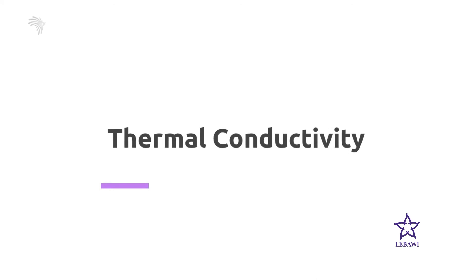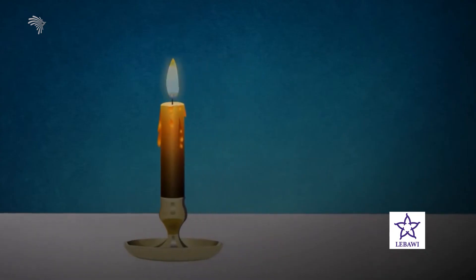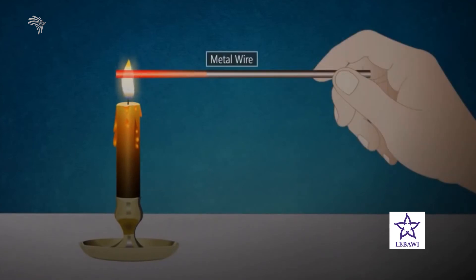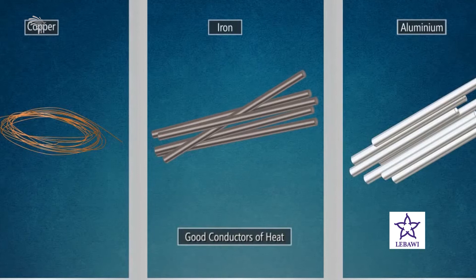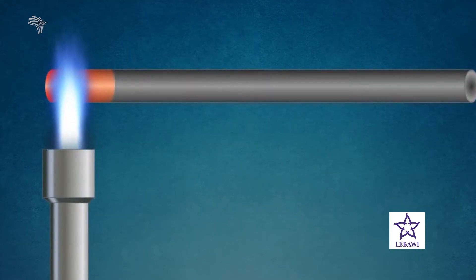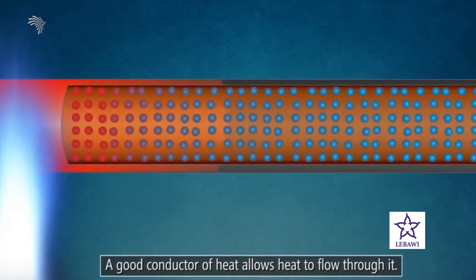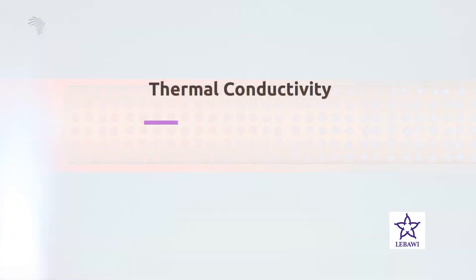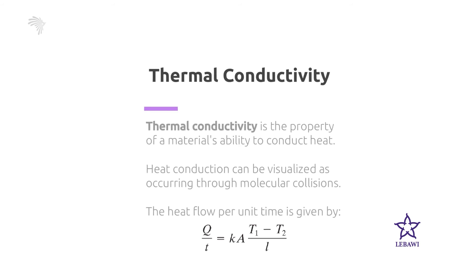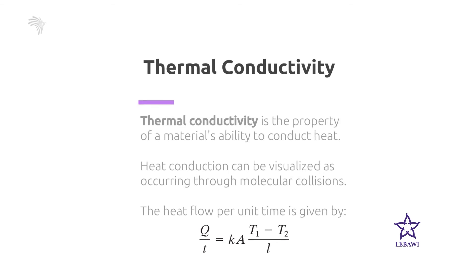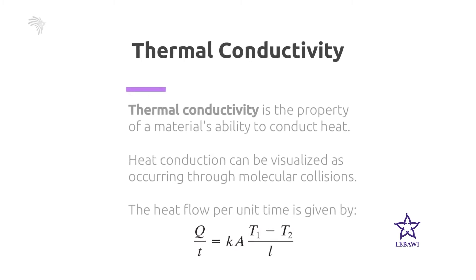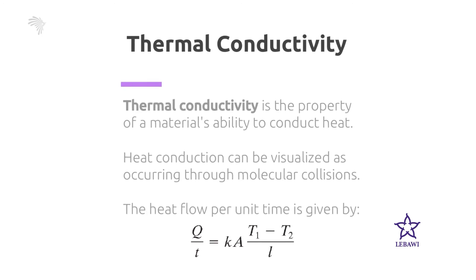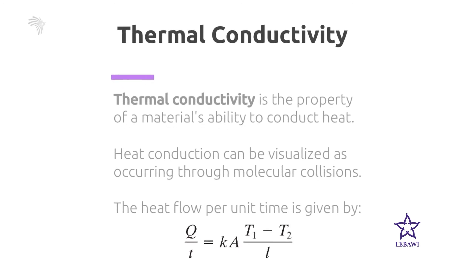Let's come to the other property, which is thermal conductivity. Thermal conductivity is a property of material — it is the ability of a material to conduct heat. We classify materials into conductors, semiconductors, and insulators. The rate of heat flow or conduction from a hotter object to a cooler one can be calculated using an equation where Q over t is the time rate of heat flow measured in power, k is the thermal conductivity, A is the cross-sectional area, and delta-T over L is the temperature gradient per unit length.